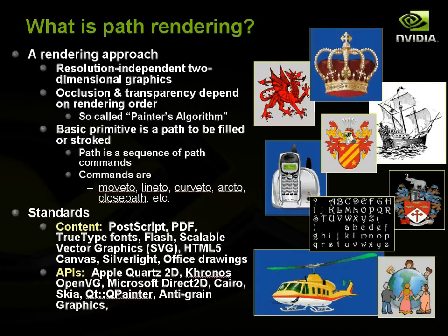So what is path rendering? It's a rendering approach for resolution independent 2D graphics. Occlusion and transparency depend on rendering order, so it uses the painter's algorithm rather than the depth buffer as used in conventional 3D rendering. The basic primitive in path rendering is the path, which can be filled or stroked. A path is a sequence of path commands that define an outline or contour of some shape. The commands available include move to, line to, curve to, arc to, and close path.